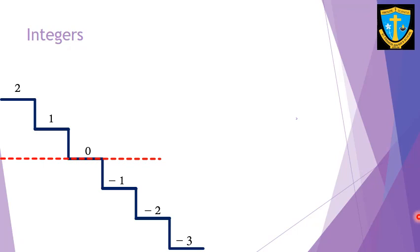So negative one, negative two, negative three — from zero, if you go down, the value goes on decreasing: zero to negative one to negative two to negative three. But from zero, if you go above and add one to each number, you get a positive number of higher order.